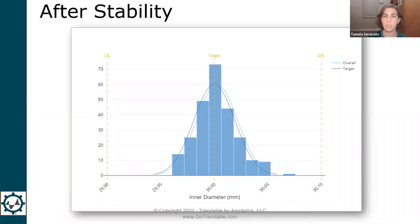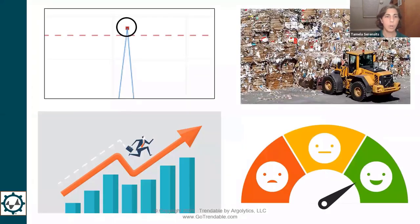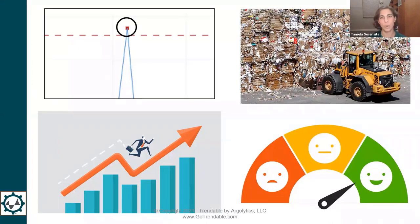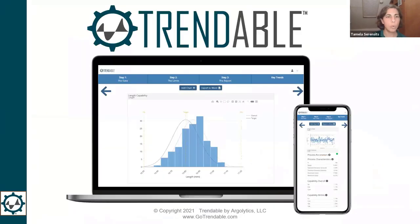Once you've gathered your data, understood all your sources of variation, and achieved stability, that's when you can compare your customer specs with your process and perform capability analysis. Then you can go ahead and announce to the world that you have the highest quality product, keep your customers happy, and — like in Craig's case — even win new business. That's the ultimate goal of statistical process control.